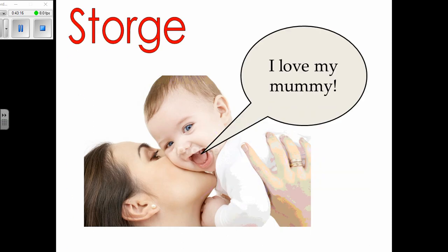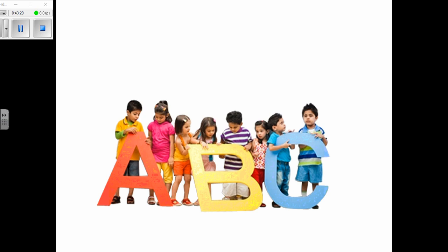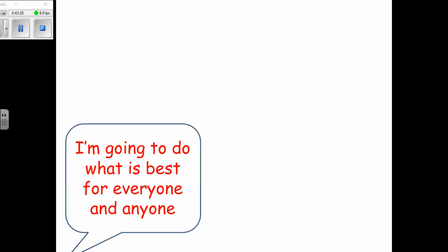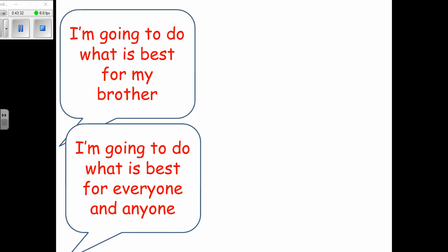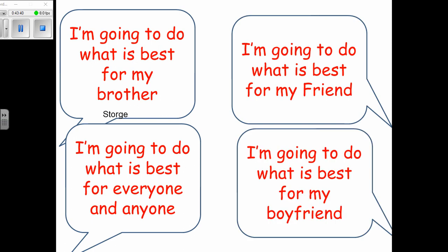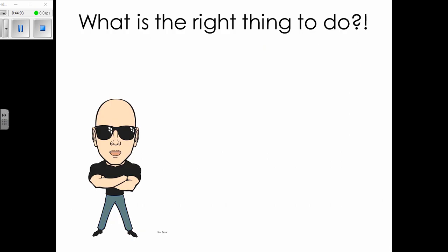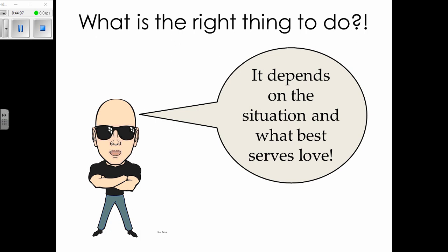Loving your parents is storge love — not good enough as the basis of an ethical system. Philos is not good enough. Agape is doing the best for everyone and anyone: not just what's best for your brother, friend, or partner. These are the wrong kinds of love. Agape is about everybody, and it is the only kind of love an ethical system should be based upon because it is democratic, fair, and importantly, it is Christian.